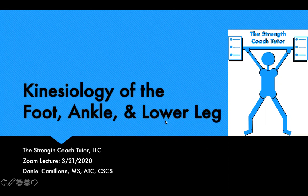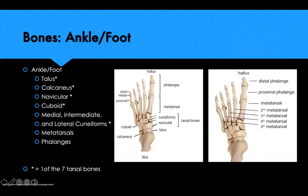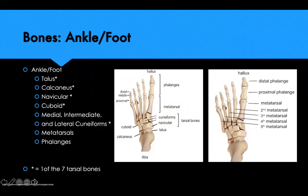We're going to talk about kinesiology of the foot, ankle, and lower leg, but before we go into the kinesiology we're going to go over the anatomy. So as you can see here, we have the ankle and foot. Two of the major bones in the ankle are going to be the talus and the calcaneus. The calcaneus is what's commonly referred to as our heel bone — you can see it better here in the left-hand picture. Sitting directly superior to it is the talus bone.